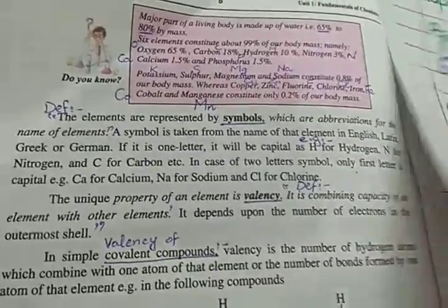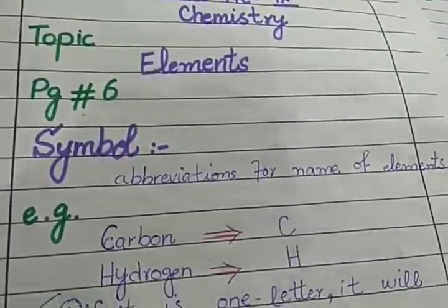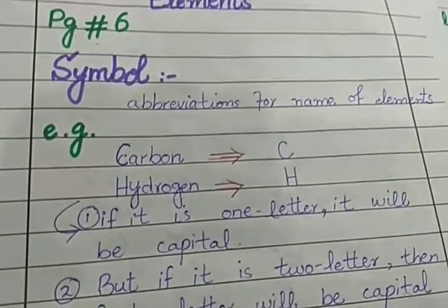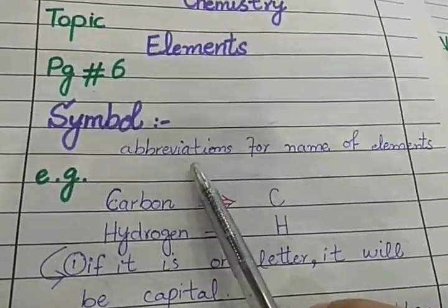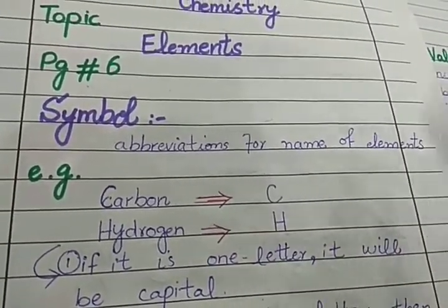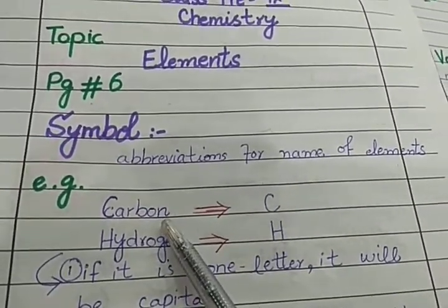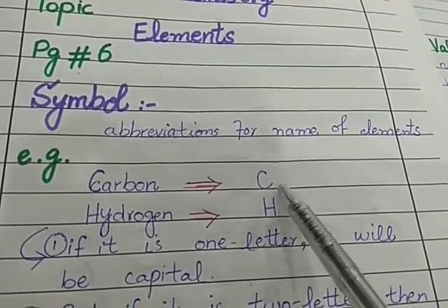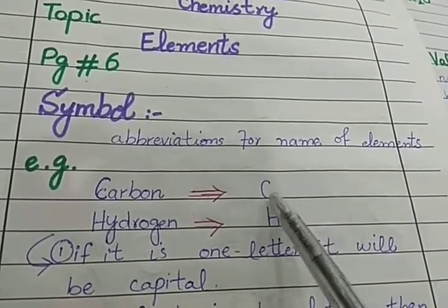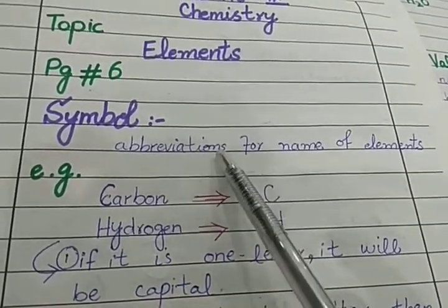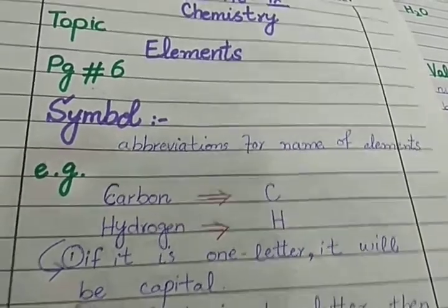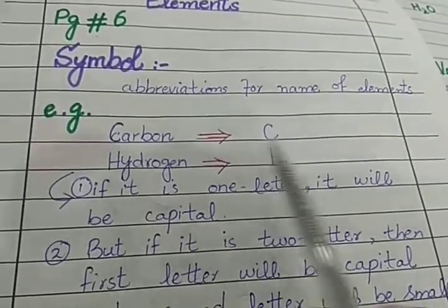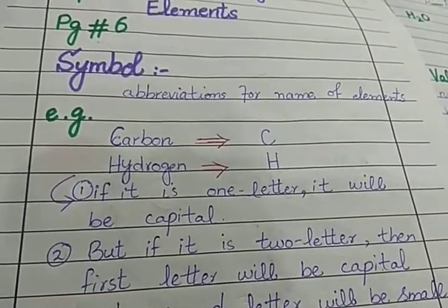Next, there are two things you need to understand: symbol and valency. First, let's see what a symbol is. A symbol is an abbreviation for the name of an element. For example, the symbol of Carbon is C, and Hydrogen is H. We use symbols every time instead of writing the full name — Carbon is denoted by C, Hydrogen by H.